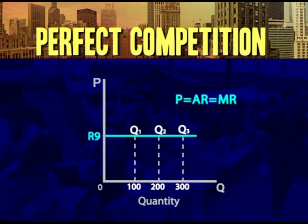This is an important conclusion of the perfect competition assumption. We can show it like this: price equals average revenue, which equals marginal revenue.